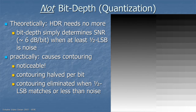Bit depth is not the same as dynamic range. In theory, high dynamic range needs no more bits than standard dynamic range. The bit depth should simply determine the signal-to-noise ratio — how much grain you're seeing in the picture — as long as at least one-half of the least significant bit is noise. The video community hasn't worked this out as well as the audio engineering community, so as a practical matter, if you don't have enough bits, you get contouring in the picture — those undesired lines you might see in a sky.